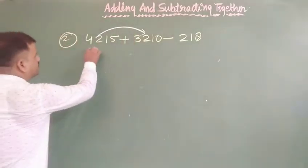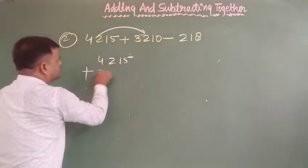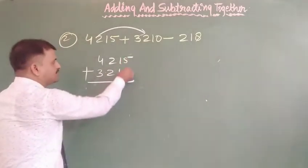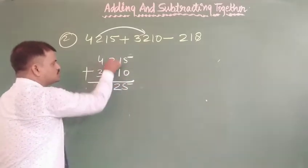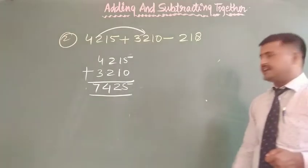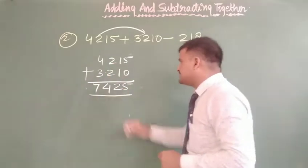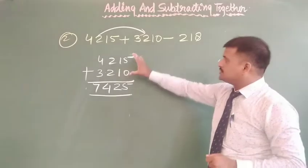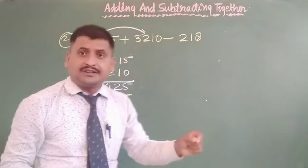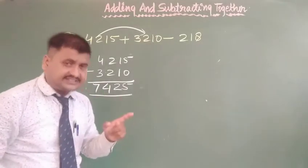But dear students, here first we have to do addition between 4,250 and plus 3,210. So now, your first number 4,250 and plus your second number 3,210. And dear students, add the sum of both numbers: 5 plus 0 we get 5, 1 plus 1 is 2, 2 plus 2 is 4, and 4 plus 3 is 7.